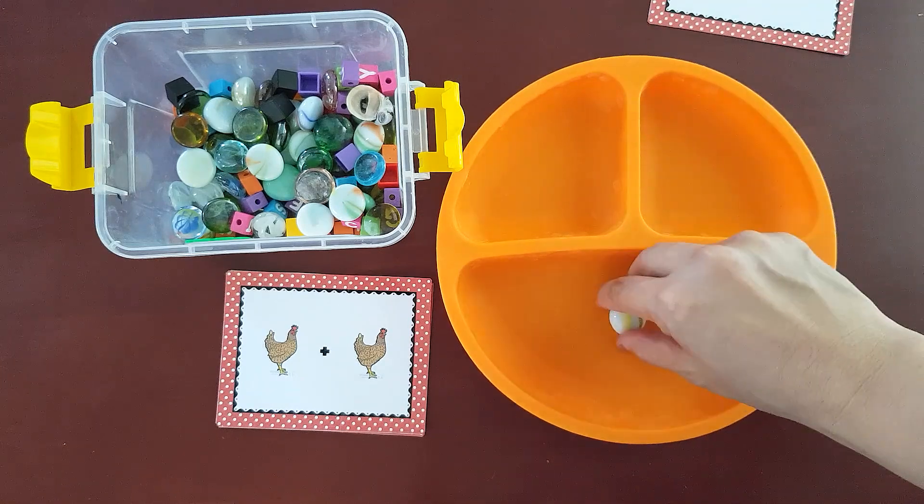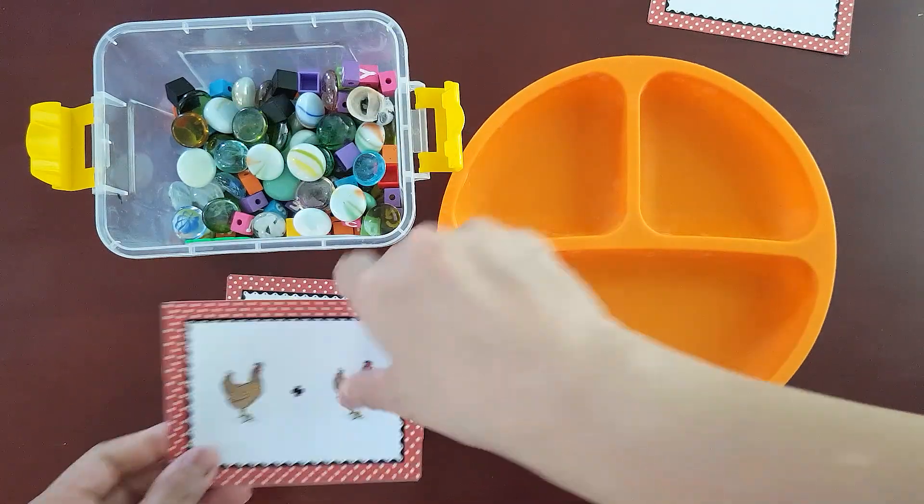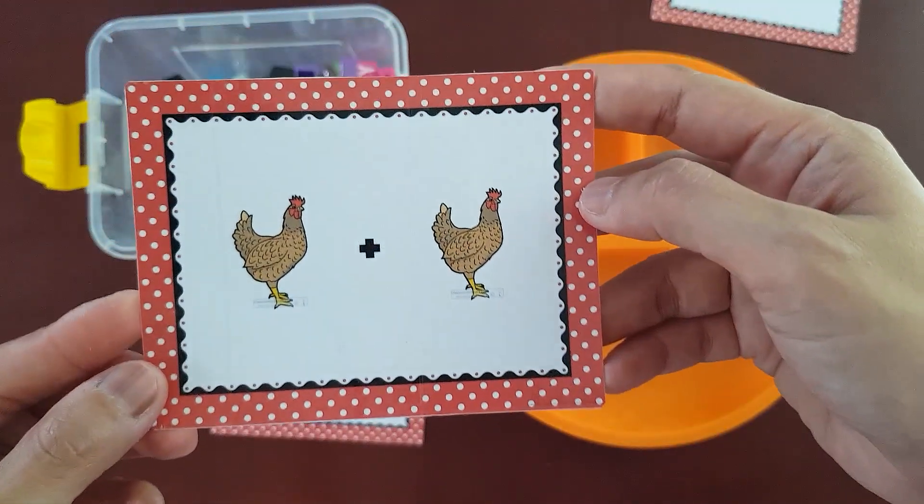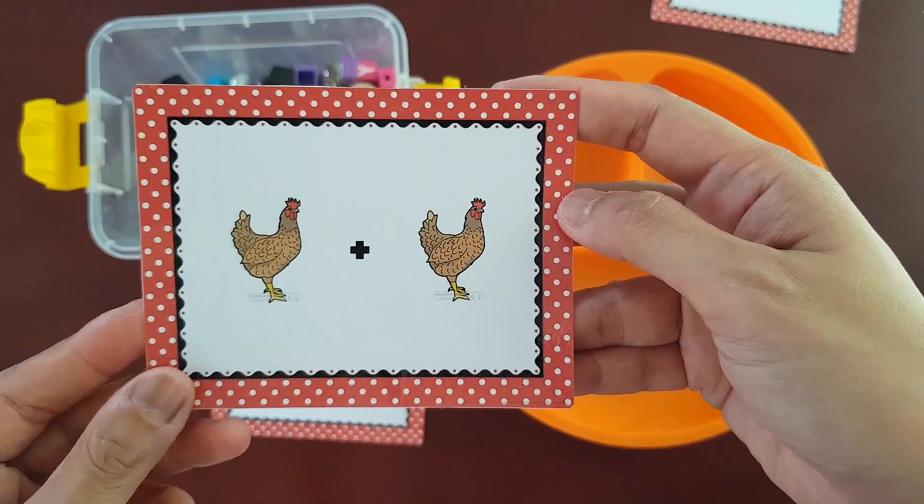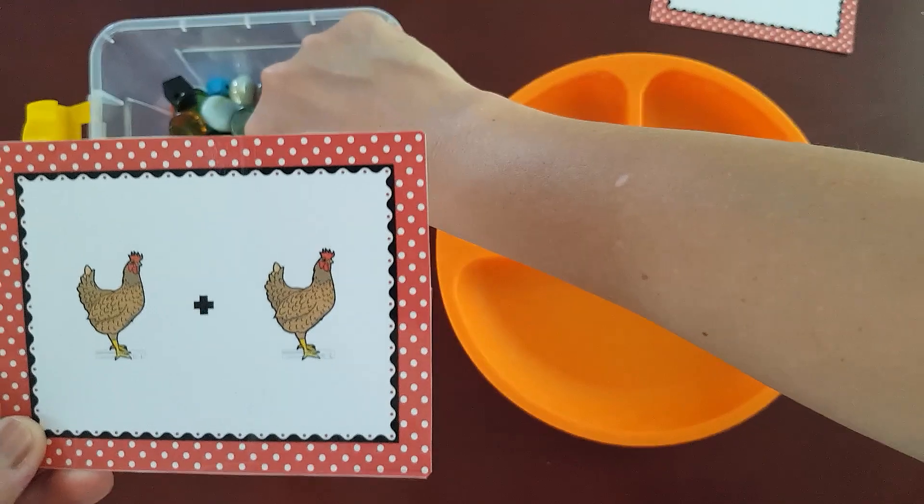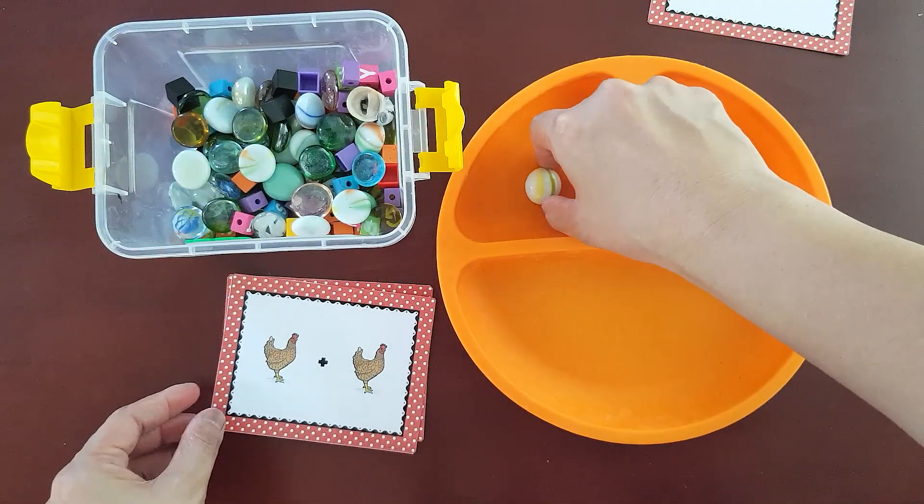So it means that one plus zero or plus nothing equals one. Okay, let's have another example. This one. I have here one hen plus one hen. So I'm gonna put one here in the first compartment.